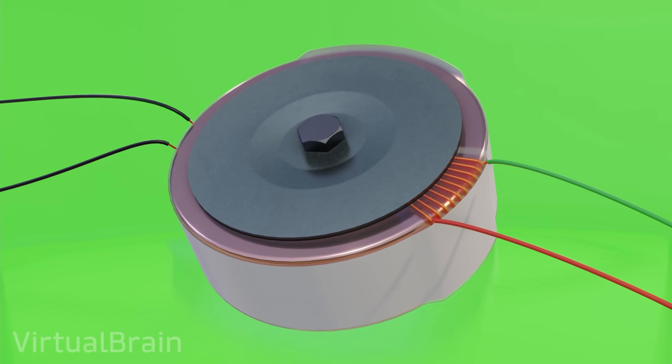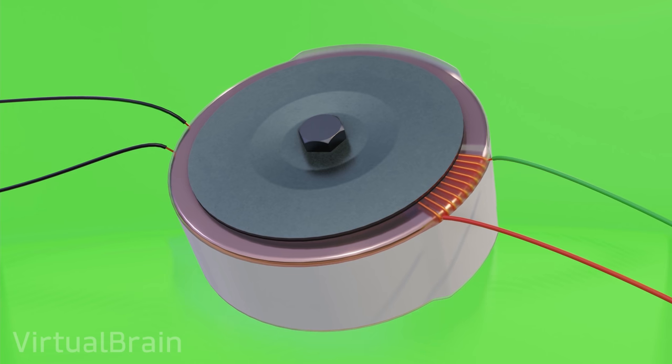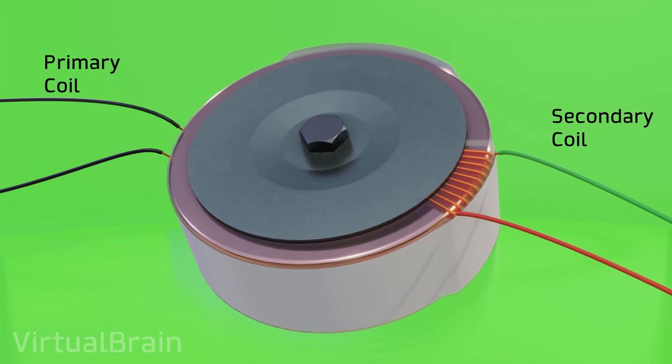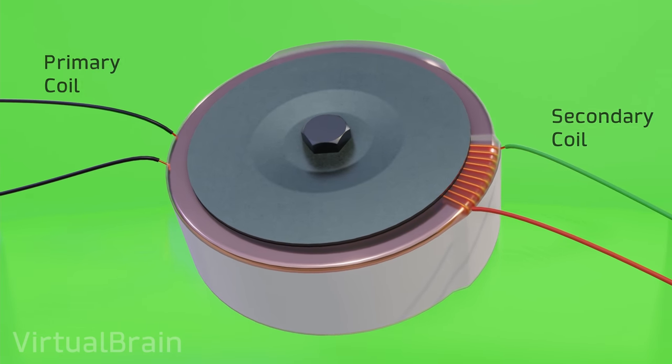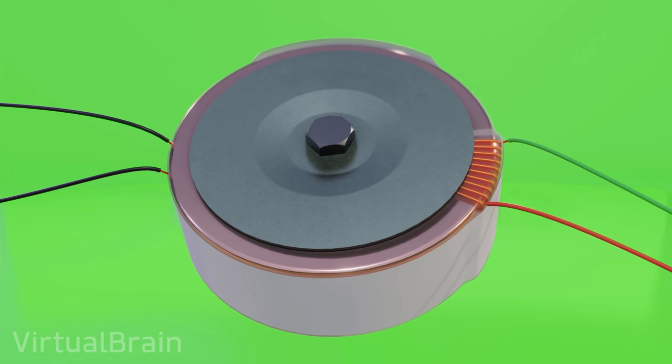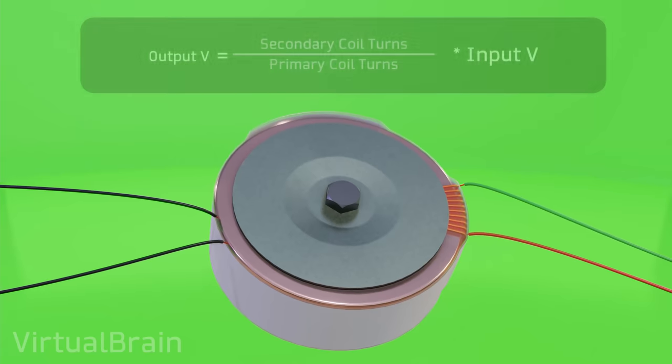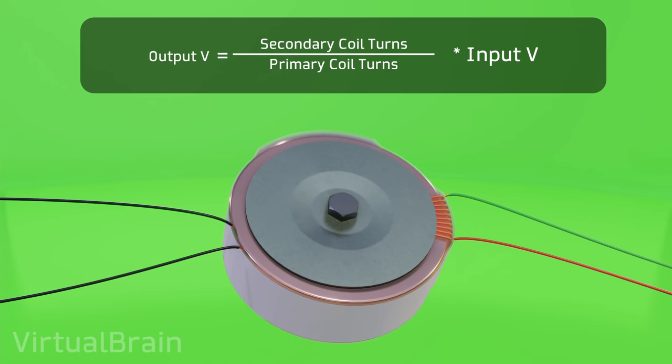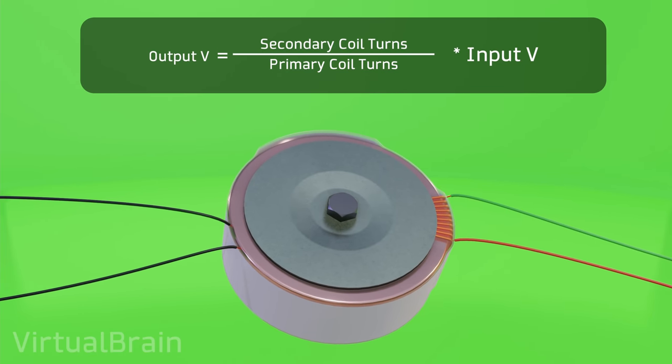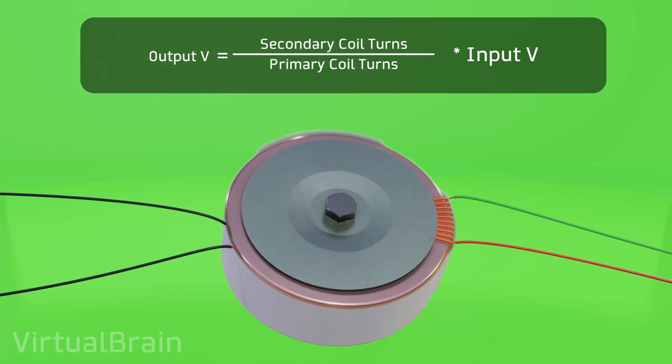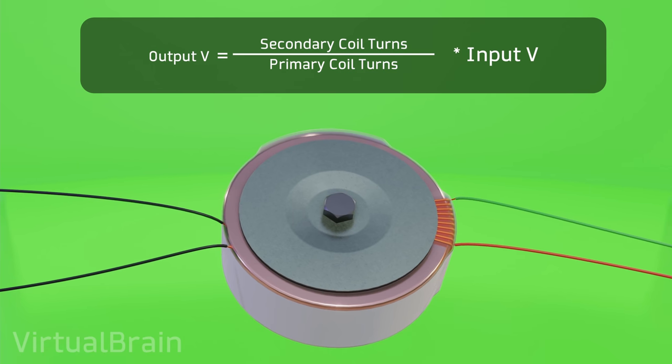An important detail to keep in mind about the configuration that I just showed you is that the primary winding has more turns than the secondary winding, which means that it is a voltage reducing transformer, but the logic is always the same. The output voltage will be equal to the input voltage multiplied by the division of the number of turns in the secondary winding and the number of turns in the primary winding.